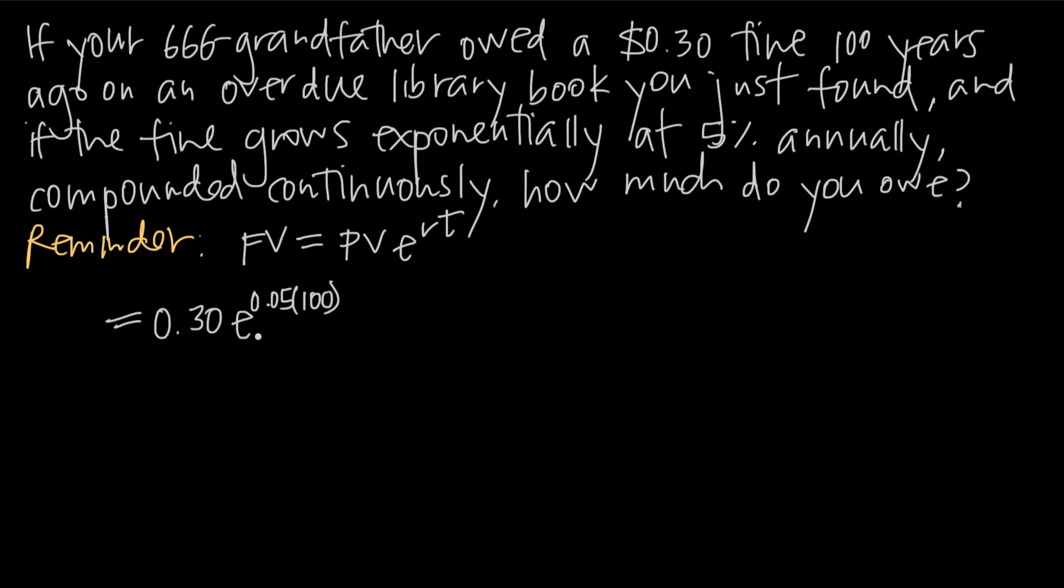Compounded continuously means this number e here. And then how much do you owe today, which is how much do you owe after time t? That's going to be future value, so future value FV is the value that we need to solve for. So all we have to do is multiply 0.05 by 100. That's going to give us 0.30e to the 5. And then if we use our calculators to calculate e to the 5th and then multiply it by 0.3, what we get is a future value of $44.52.